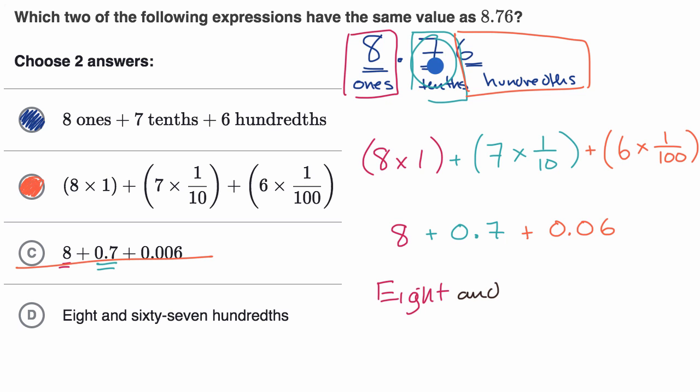So you could use seven tenths as 70 hundredths, or you could view this whole thing as 76 hundredths. So it could be eight and 76 hundredths.